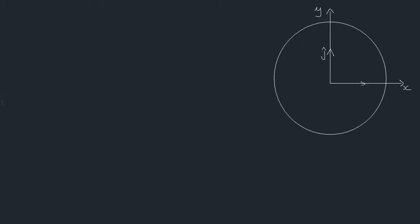This will be the x-axis, and this will be the y-axis. This will be the j-unit vector of magnitude 1, and this will be the i-unit vector of magnitude 1. At any particular time t, our particle which is traveling in a circular orbit is at some point, and we want to describe its position using a displacement vector from our origin.